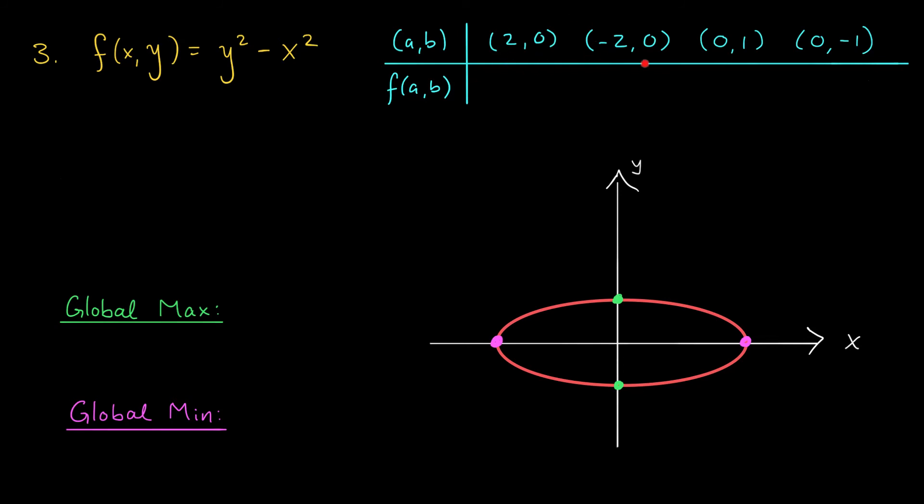When I plug in 2, 0 or minus 2, 0 to my function f, I'm going to get values of minus 4 each time. If instead I plug in 0, 1 or 0, minus 1, we're going to get values of 1. Ah, so it looks like we have two global maxima, each with a value of 1, that occur at 0, 1 and 0, minus 1. We also have two global minima. Both have value minus 4 and they occur at 2, 0 and minus 2, 0.